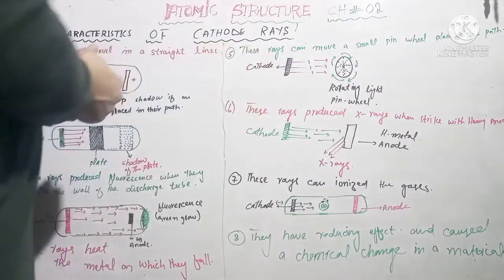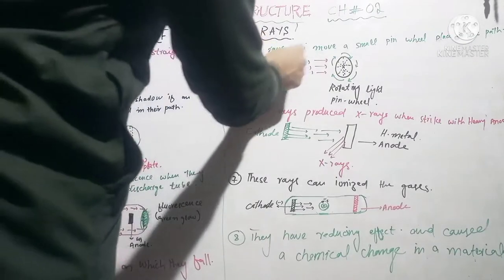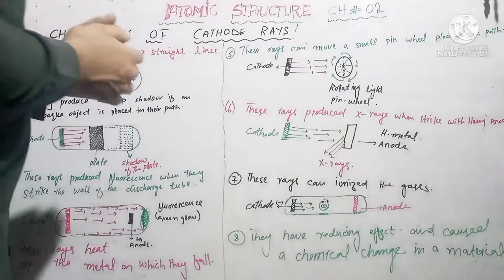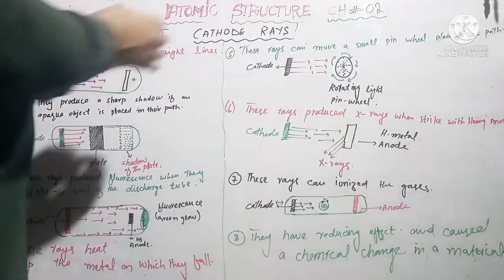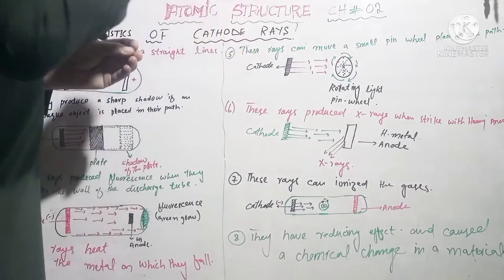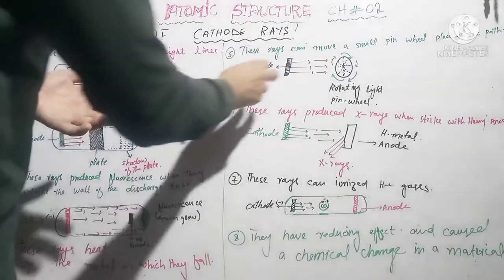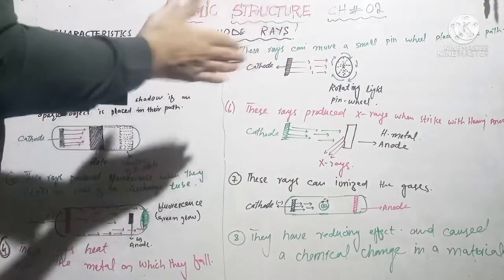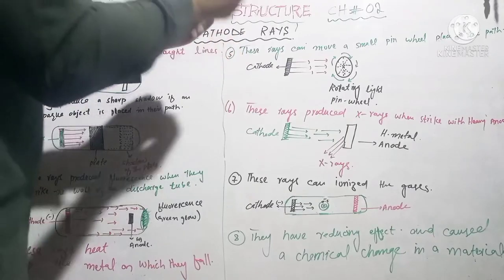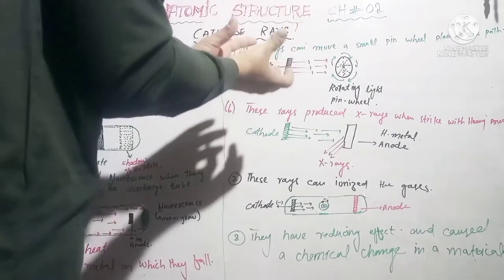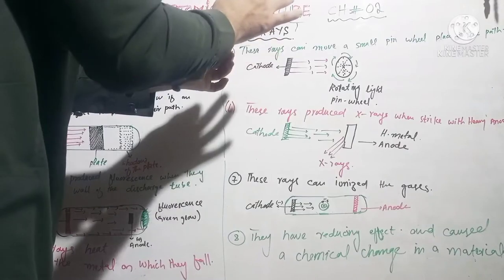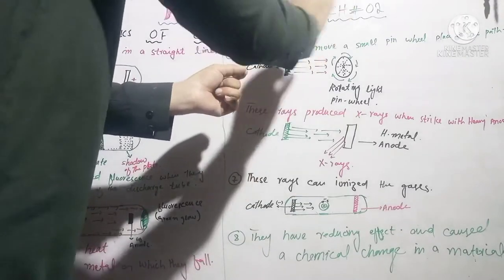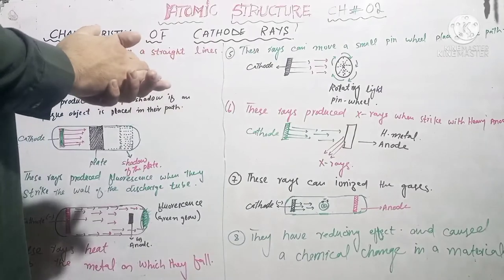Characteristic number 5: these rays can move a small pin wheel placed in their path. When cathode rays fall on the light pin wheel, it will rotate.